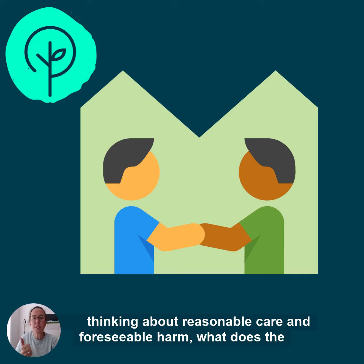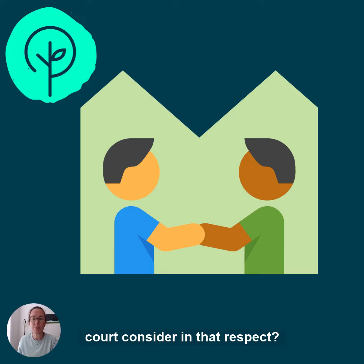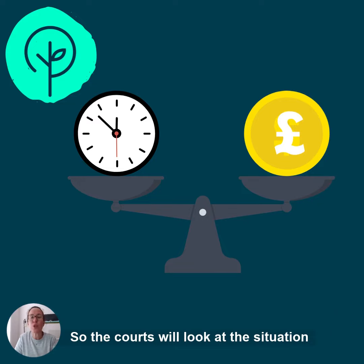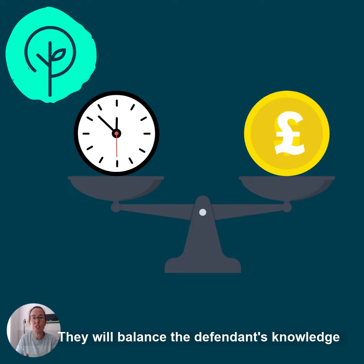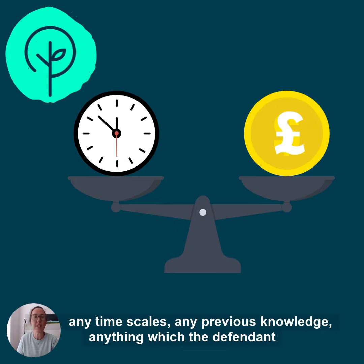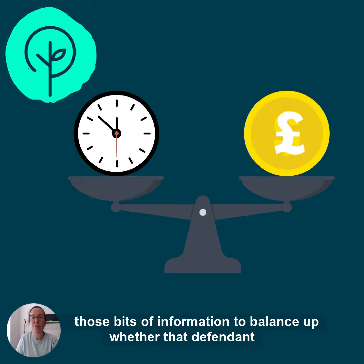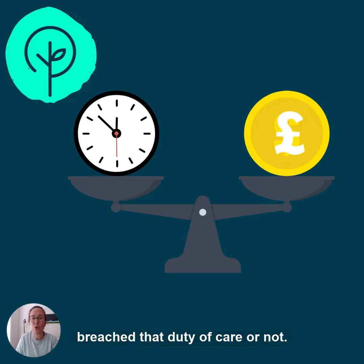But when we're thinking about reasonable care and foreseeable harm, what does the court consider in that respect? Well this is where a real balancing act comes into play. So the court will look at the situation, they will balance the defendant's knowledge, the defendant's financial means, any time scales, any previous knowledge, anything which the defendant should reasonably have considered, and they will use all of those bits of information to balance up whether that defendant breached that duty of care or not.